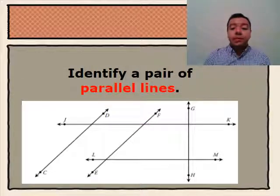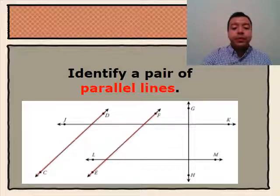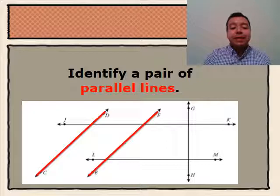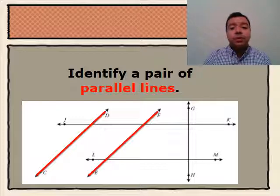Next we'll be looking at different types of lines. The first pair of lines that we're going to look at are parallel lines. In the diagram below, we see that line CD and line EF are parallel lines. We know that they're parallel lines because no matter how long we extend each of those lines, the two lines will never intersect.